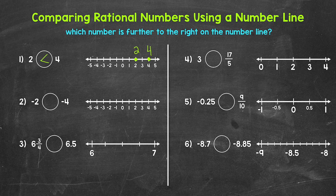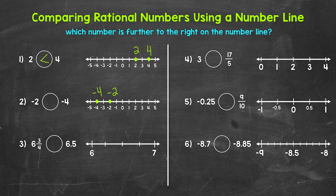Let's move on to number two, where we have negative two is greater than, less than, or equal to negative four. Negative two is right here on the number line, and negative four is right here. So which number is further to the right, and therefore greater in value? Negative two. Negative two is greater than negative four. At first glance negative four may seem greater because four is greater than two, but we are working with negatives here. Negative two is further right on the number line — it's greater in value. So negative two is greater than negative four.